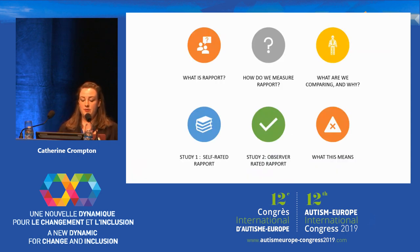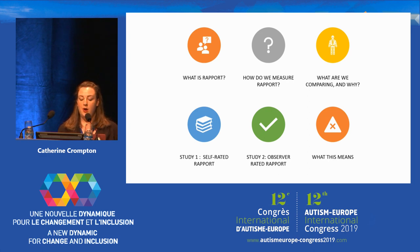So a quick rundown of the structure of what I'll be speaking about this morning. Firstly I'll tell you what we mean by rapport and how we measure it. I'll explain what we're comparing and why. I'll talk you through the two experimental studies we've just completed on interactional rapport and finish by talking about what we think this means for how we understand social interaction and autism.